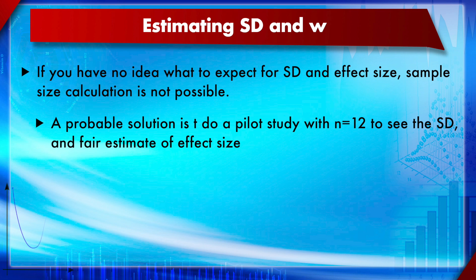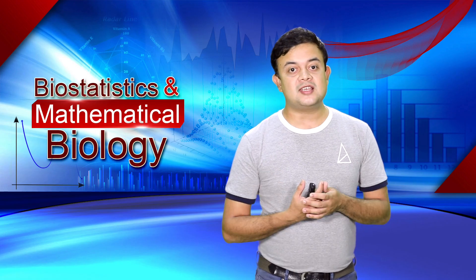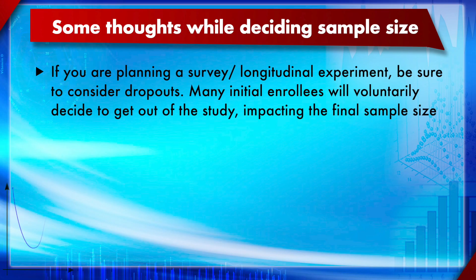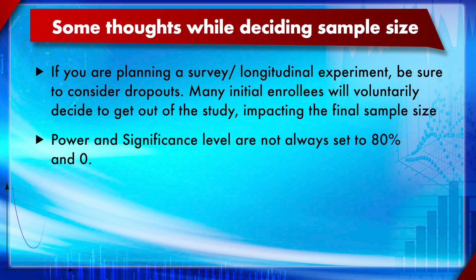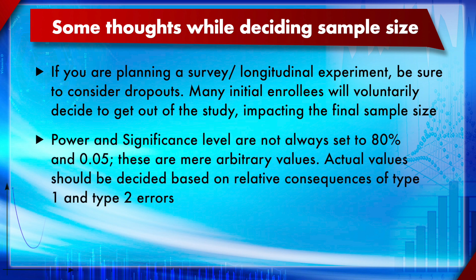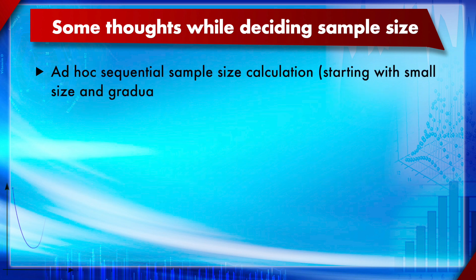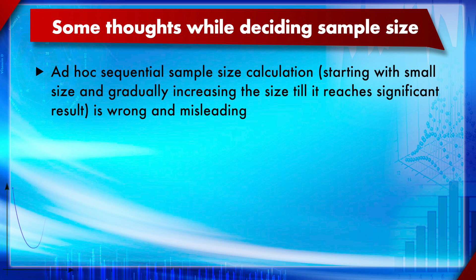Some important thoughts when deciding sample size: if planning a survey or longitudinal experiment, be sure to account for dropout, as losing enrollments will affect your data analysis later. Power and significance level are not always set to 80% and 0.05 — these are arbitrary values, and the actual values should be based on relative consequences of type 1 and type 2 errors. Ad hoc sequential sample size calculation — starting with a very small sample and incrementally increasing until p < 0.05 — is wrong practice, also known as dynamic sample size estimation, and is regarded as scientific misconduct.